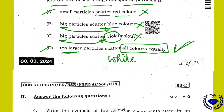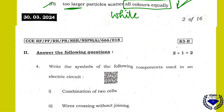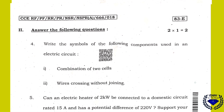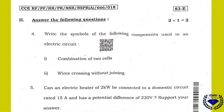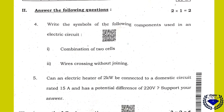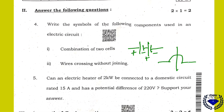Question number 4: write the symbol of the following components used in an electric circuit. For combination of cells, you draw one larger positive-negative, positive-negative like this. For wires crossing without joint, one wire will go here and it will not connect — that is the symbol.